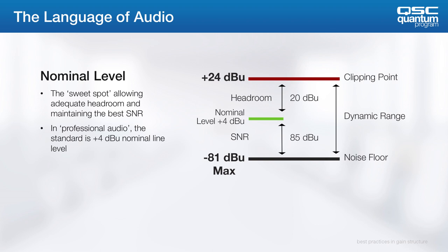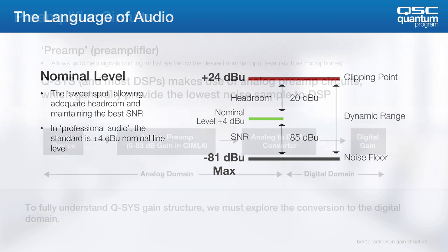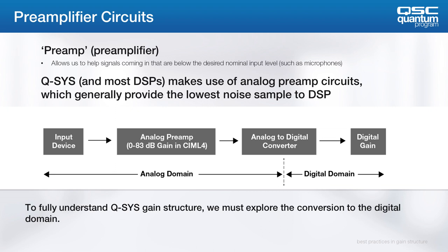Consumer level audio circuits are typically negative 10 dBV nominal, with respect to 1 V. However, not all of the audio sources that we bring into Q-SYS are going to be plus 4 nominal. Microphones, for example, typically come in at around negative 40 nominal. This is why Q-SYS and almost every other DSP makes use of an analog preamp. This allows you to increase or decrease the gain of that device before it flows into an A-to-D converter, at which point we jump from the analog domain to the digital domain.